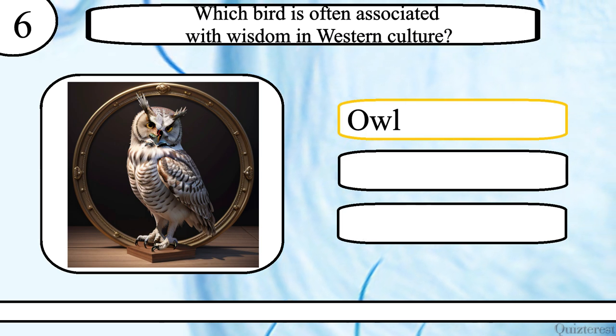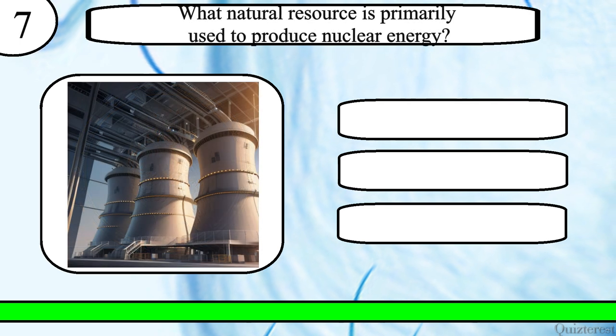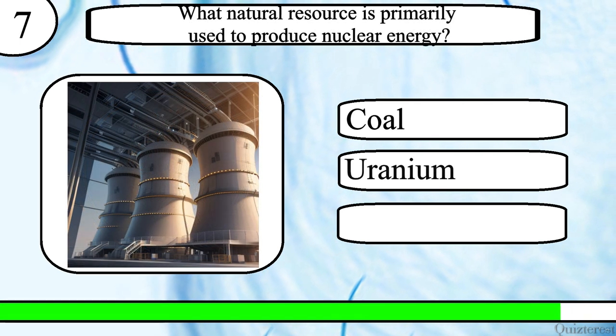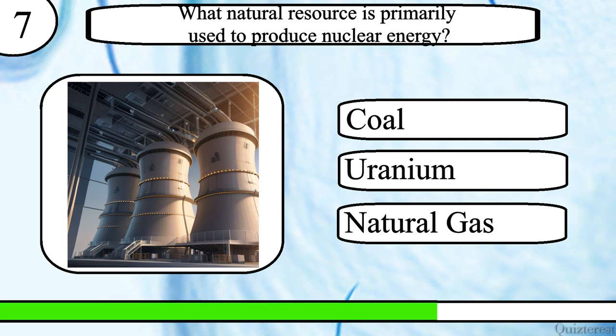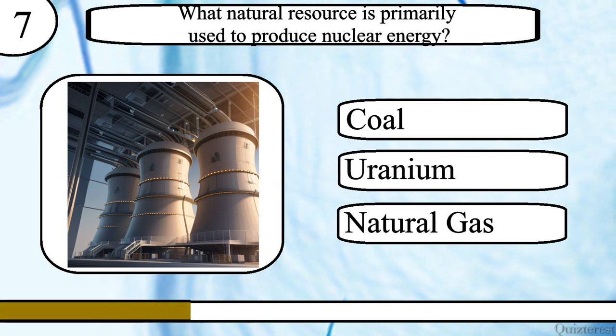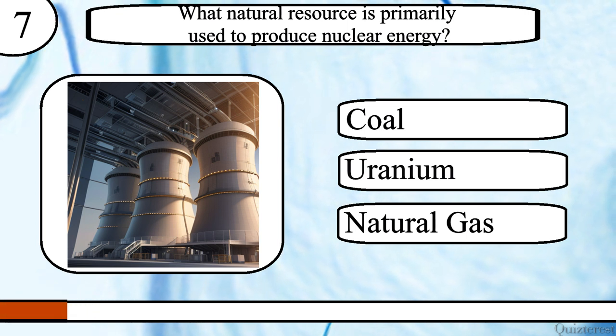Question 7. What natural resource is primarily used to produce nuclear energy? Coal, uranium or natural gas? The correct answer is uranium.